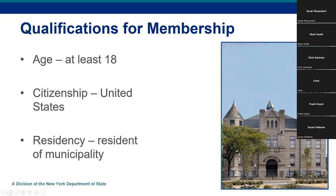For most elected and appointed officials, you can work for a local government and be younger than 18, and not necessarily be a resident of the municipality. But for appointed and elected officials who serve on administrative boards — such as the zoning board of appeals, the planning board, and the local governing board — you have to be at least 18 years old. You have to be a United States citizen and live in the municipality. There are exceptions written into Article 3 of Public Officers Law for residency — if the local government can't find someone qualified to serve, for example as municipal attorney or a code official.